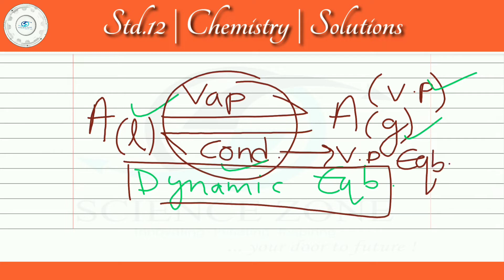Initially the vapor pressure created when particles first escaped from the liquid surface and collided back is normal vapor pressure. But after a certain point, when both vaporization and condensation proceed at the same rate, a dynamic equilibrium stage is created, and the vapor pressure at that time is known as dynamic equilibrium vapor pressure.